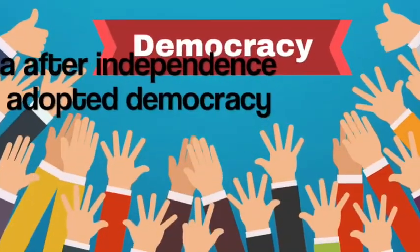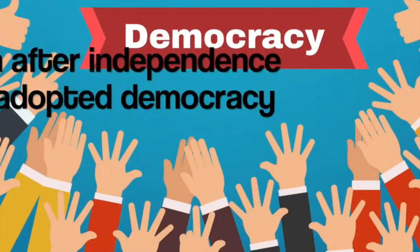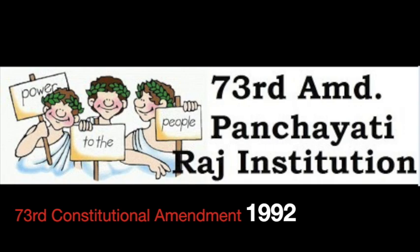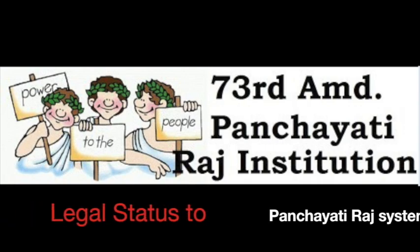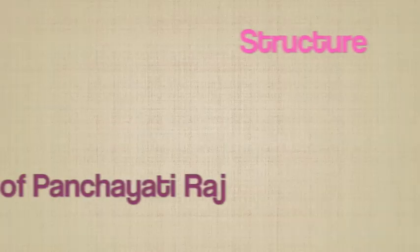India, after independence, adopted democracy. The Government of India passed the 73rd Constitutional Amendment in 1992, which gave legal status to the Panchayati Raj System.